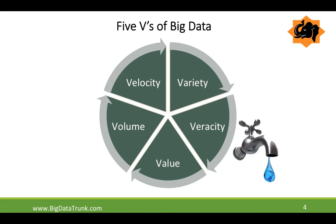The fourth V stands for Veracity, which was added at a later point in time. Veracity means the quality and cleanliness of the data. It's not only important to have volumes of data processed at high speed — you also want it to be right and correct. That's why this fourth V was added, to ensure data quality and the right information at the right time. The final V is Value, and value is an integral part of everything we do, so it plays an important role as well. That concludes the five V's as another way of defining big data.